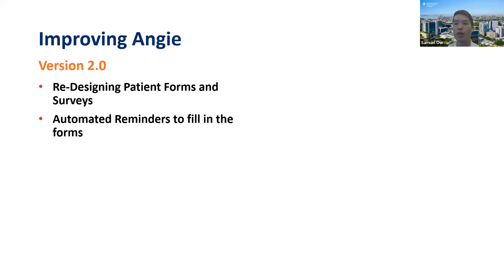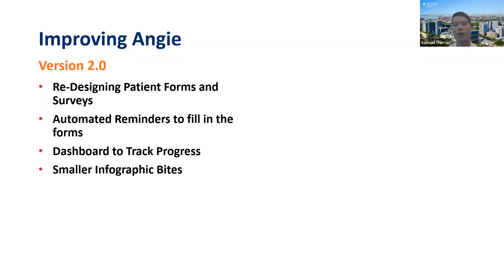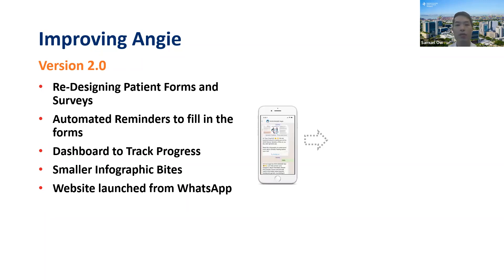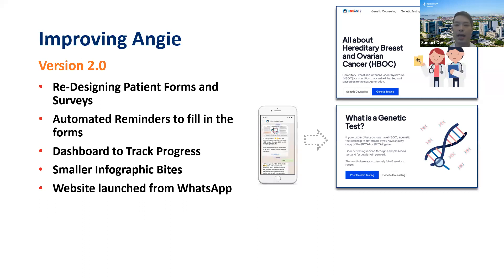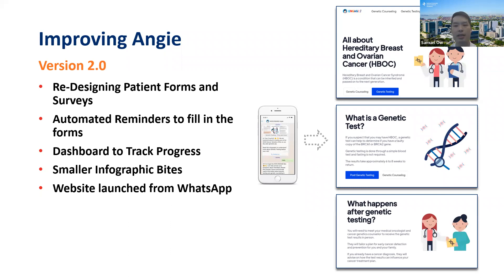So what's Angie version 2? We want to redesign patient forms and surveys, use automated reminders to fill in forms in a non-annoying manner, and have a dashboard to track progress so that our genetic counselors have an easier time. We want smaller infographic text and the option to launch a website through WhatsApp so patients can scroll through information on hereditary breast and ovarian cancer, genetic tests, and what happens after testing. We're also considering live video to bring that live clinic experience to patients before they come in.